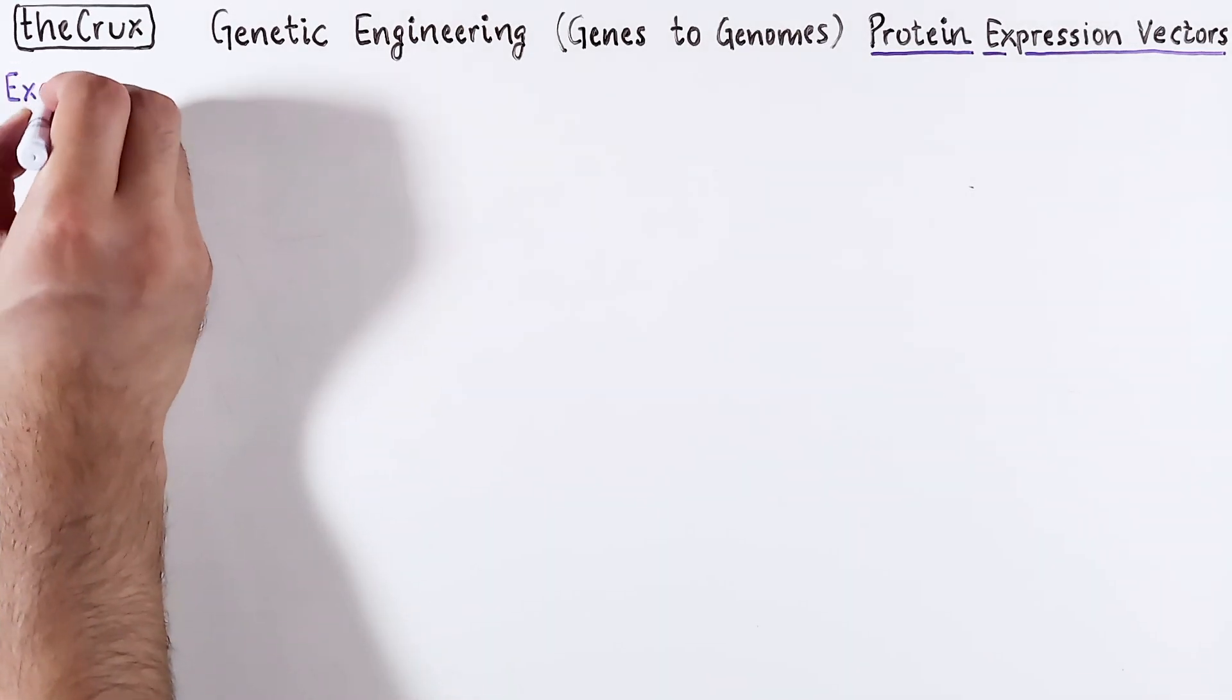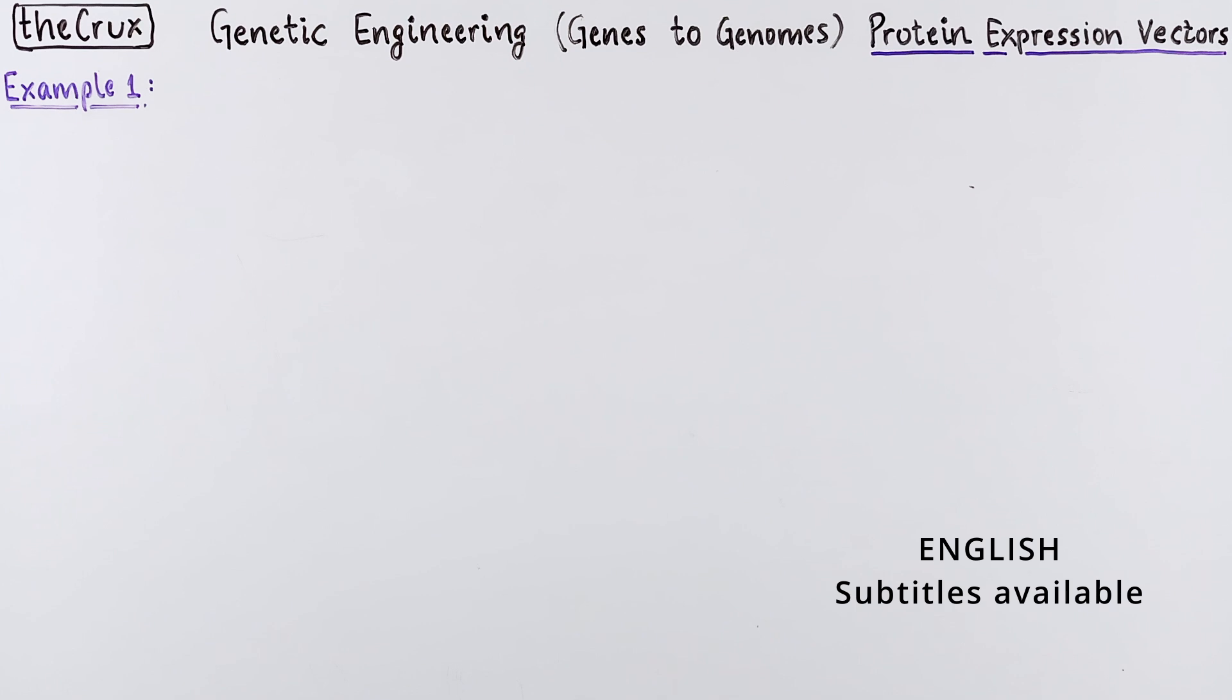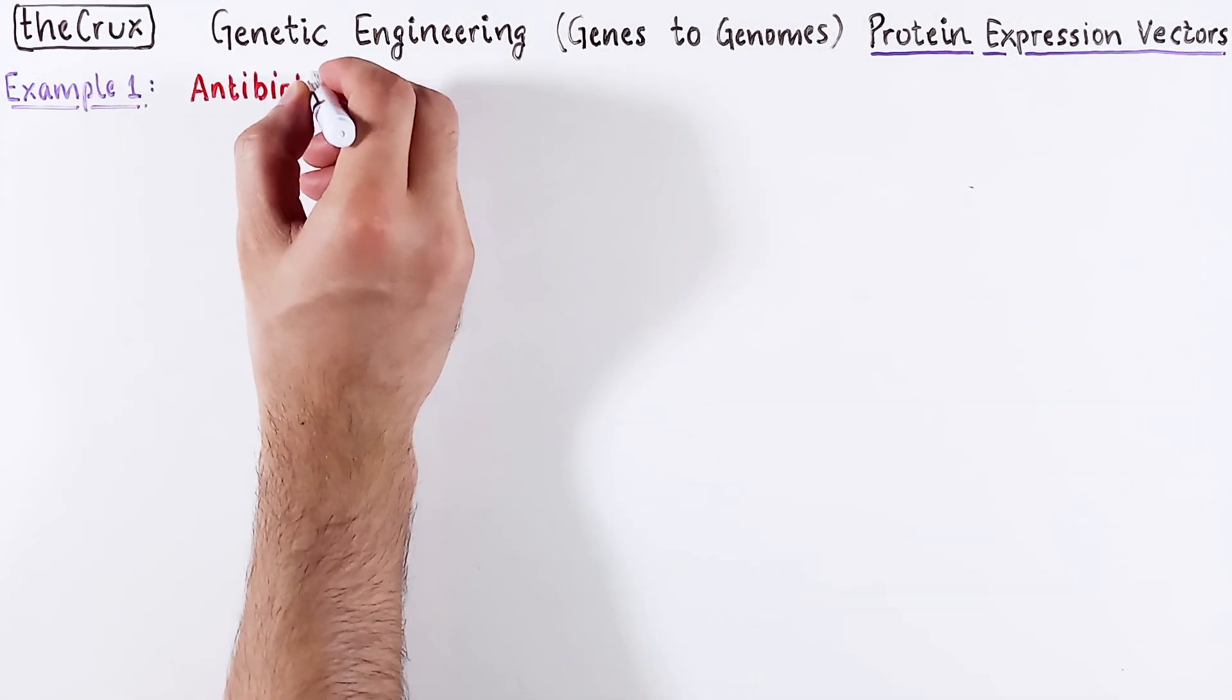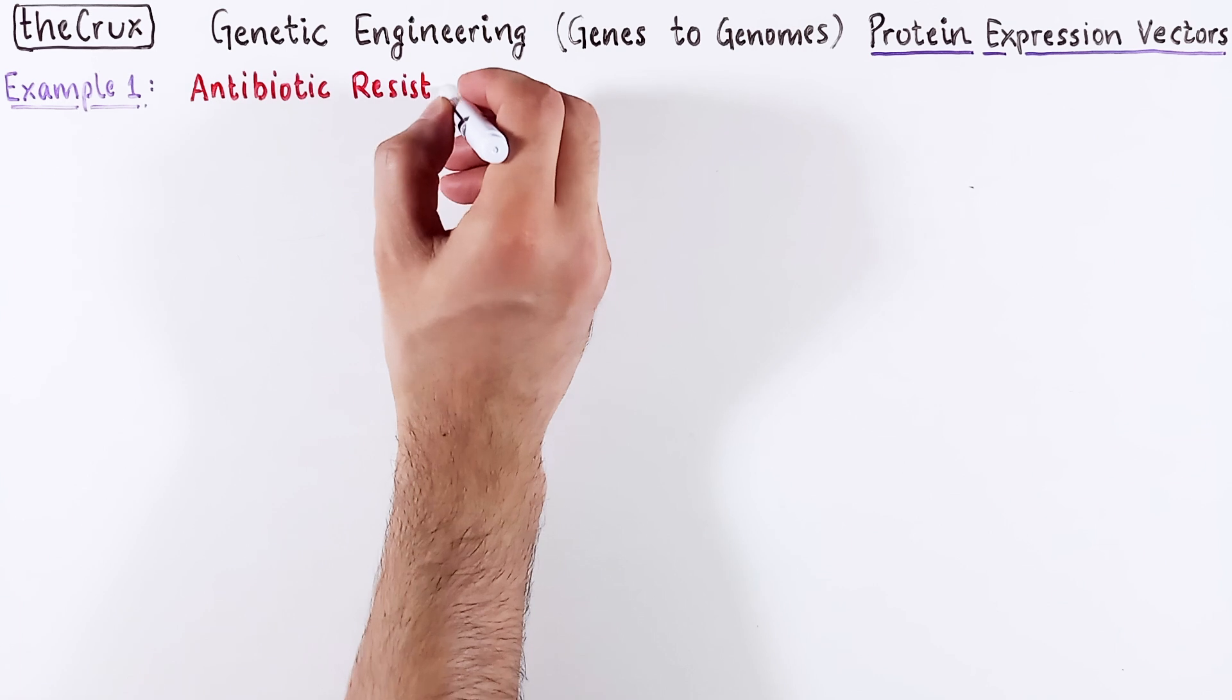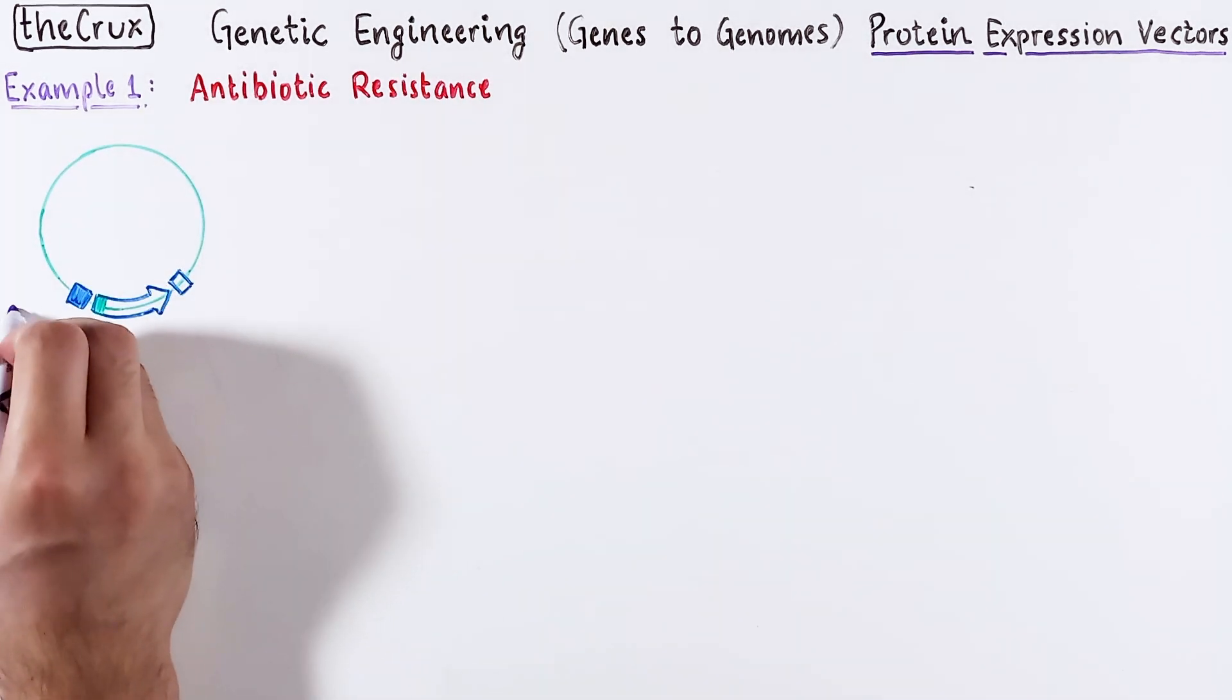These are five examples to develop your intuition around protein expression vectors based on the information you already have. Example 1 is so common that you don't even think about it. The ampicillin resistance gene in the plasmid backbone.